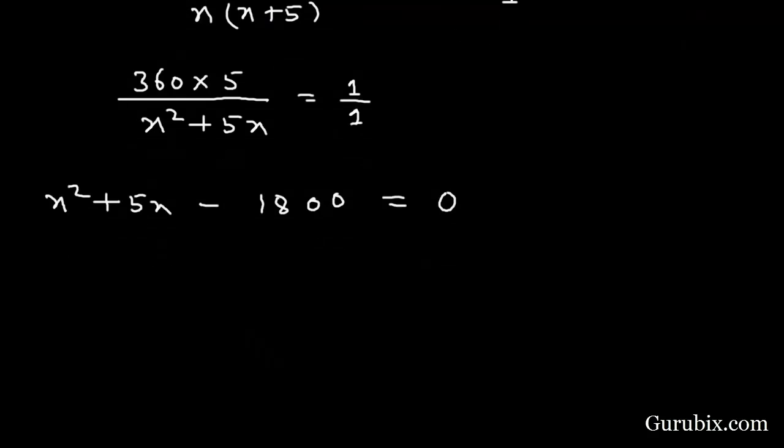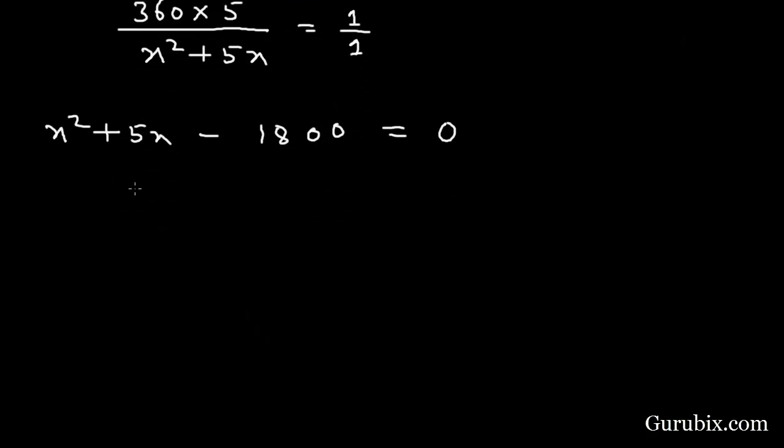Now we shall factorize this quadratic equation using the method of middle term splitting. Then we have x square plus 45x minus 40x minus 1800. We shall take common x from first two terms. Then we have x plus 45 in the bracket.